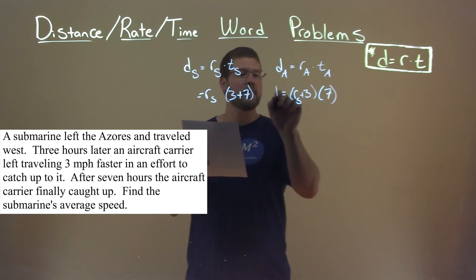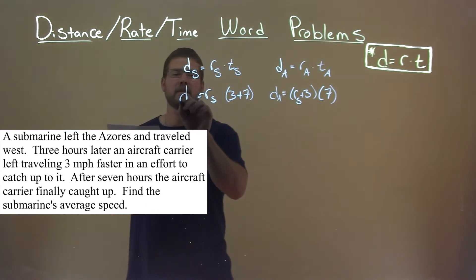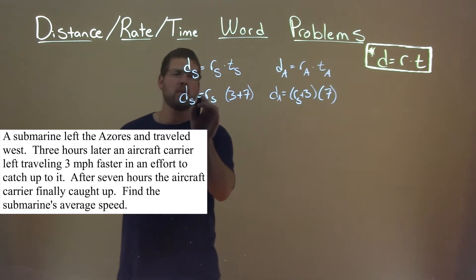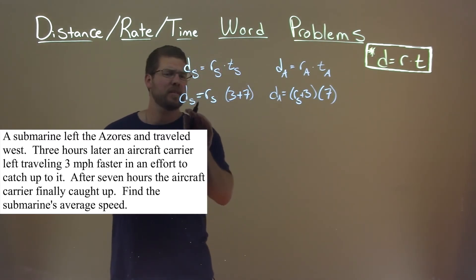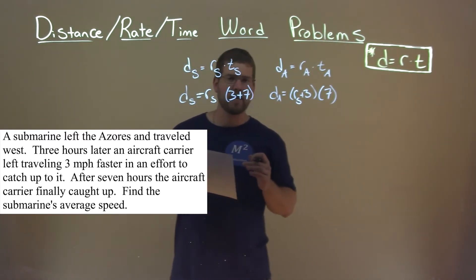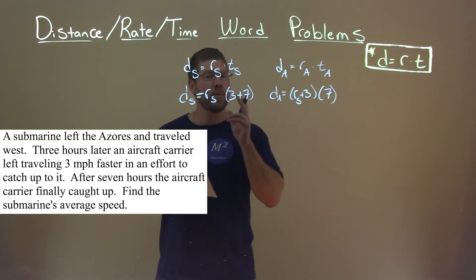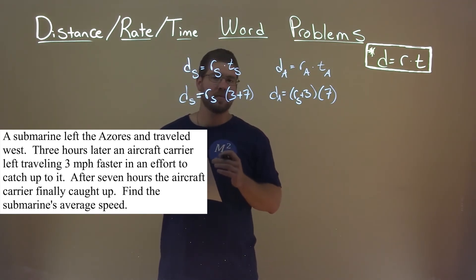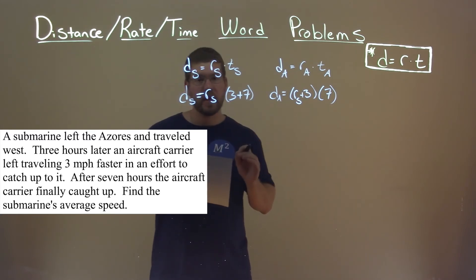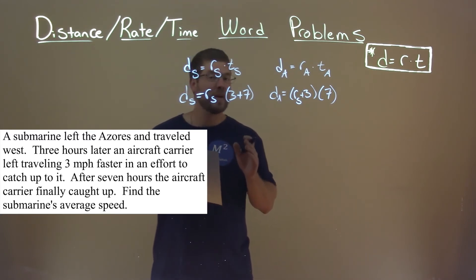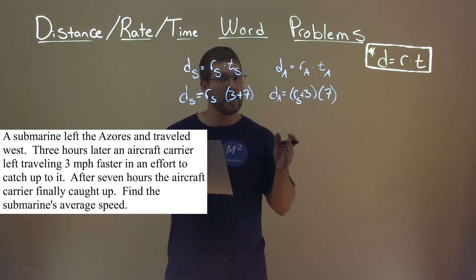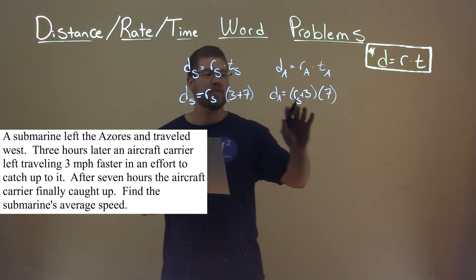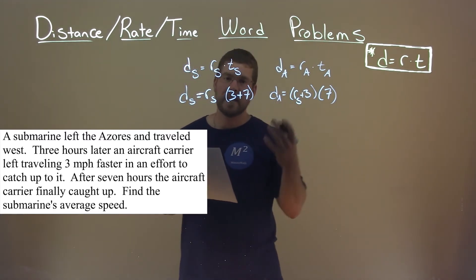That's equal to the distance of the aircraft carrier and the distance of the submarine. We don't know those distances individually, but we do know they're going to be the same, because they both left from the same place and the aircraft carrier caught up to it. Whatever that distance is, it's going to be the same, so we can set these two equations equal to each other.